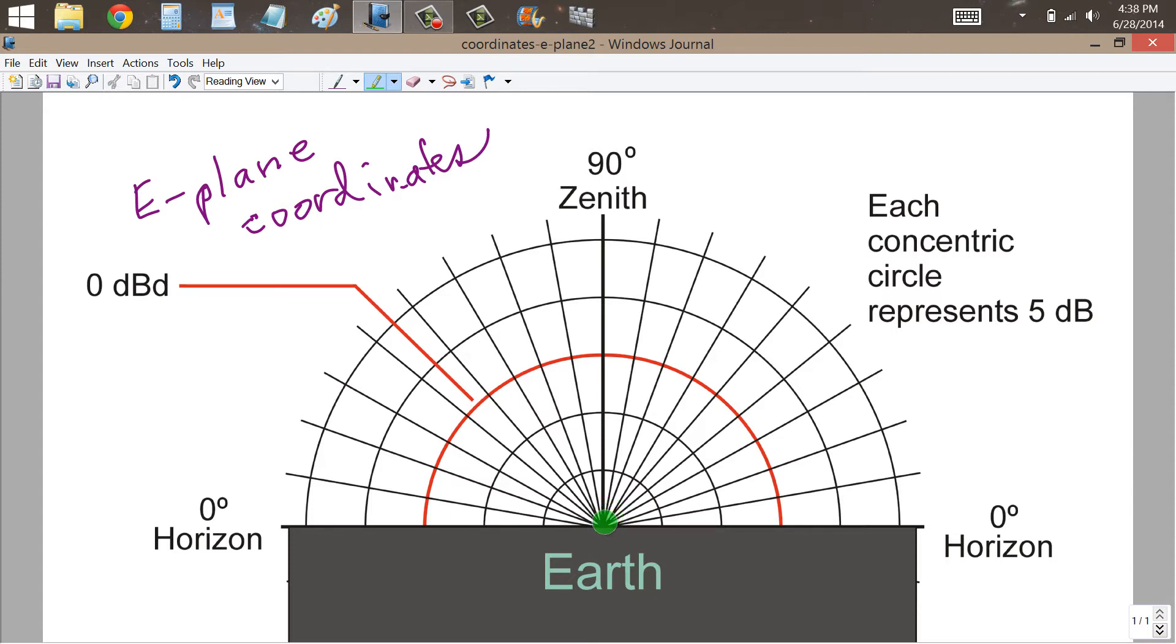For example, suppose that we had a quarter of a wavelength vertical antenna. Further, suppose that this Earth is perfectly conducting, or that you have so many radials buried in the ground around your antenna that it is, for all intents and purposes, perfectly conducting Earth.